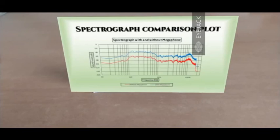In this case we have two curves, the red curve and the blue curve. The red curve is a spectrograph of a sound without the use of a megaphone and the blue one is with the use of a megaphone.